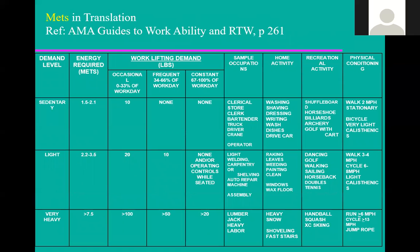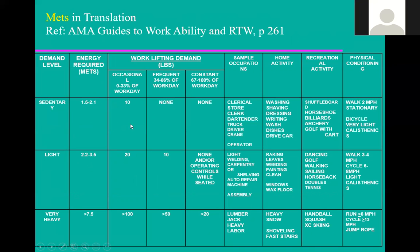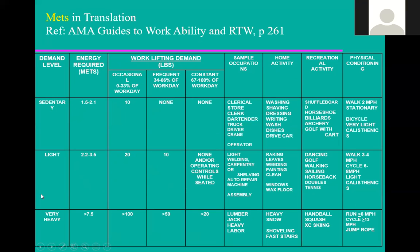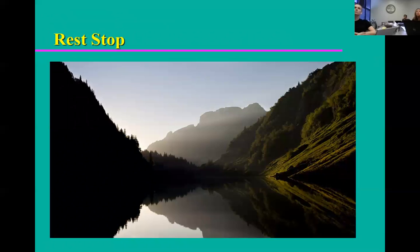In the AMA Guides workability and return-to-work book, I put in a chart that translates METs across into what someone can do for work — lifting demand, sample occupations, home activities, recreational activities, and what physical condition they're in. You get the MET value and read it straight across. It helps guide the evaluation of what these individuals can do.